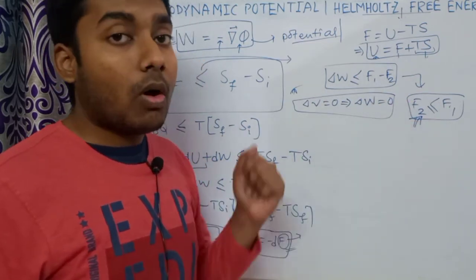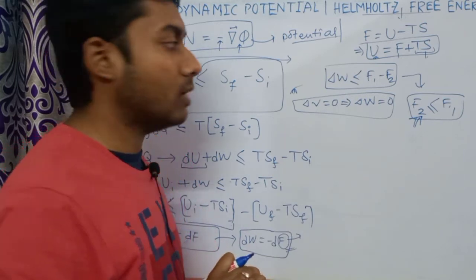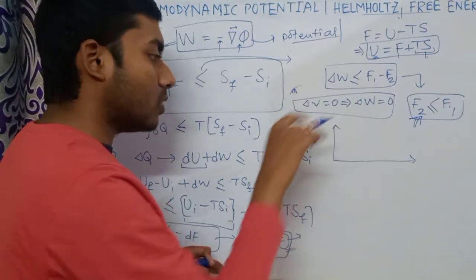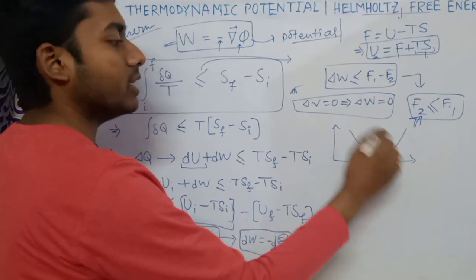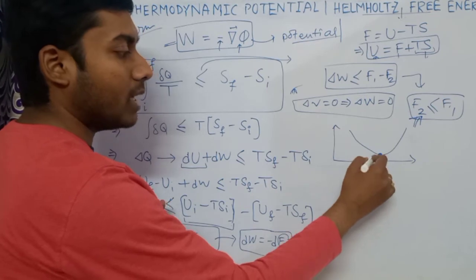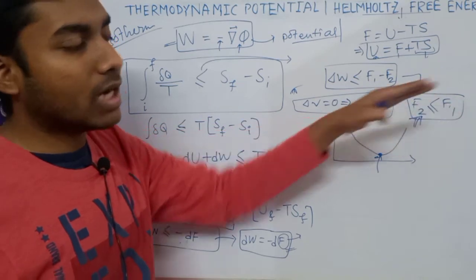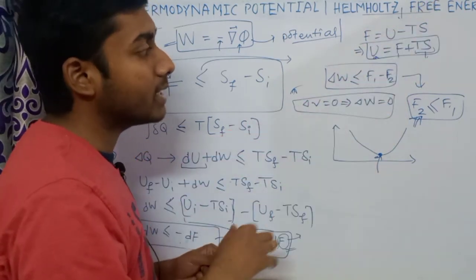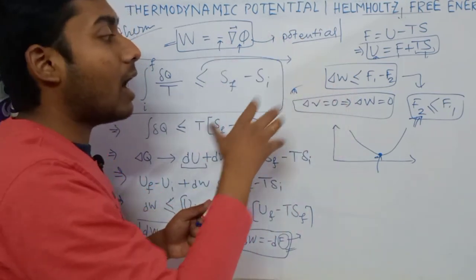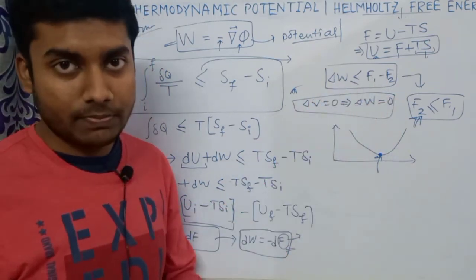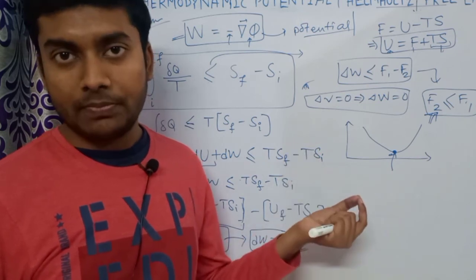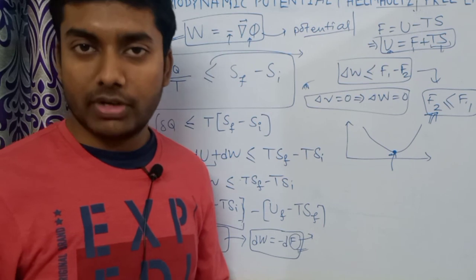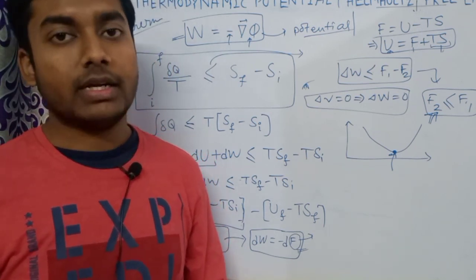So from here, I can say that Helmholtz free energy is a thermodynamic potential of an isothermal isochoric process, or simply, the Helmholtz free energy is a thermodynamic potential at constant volume. In this video, I have discussed these things. If you enjoyed this, please subscribe to this channel and hit the bell icon to get notifications of my upcoming lectures on various topics of physics. Share this video with your friends. Take care of yourself. Thanks for watching.